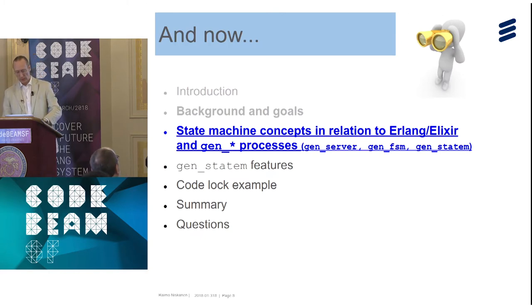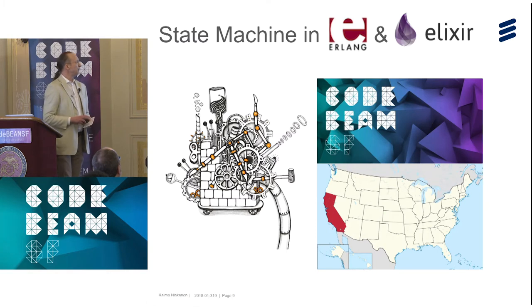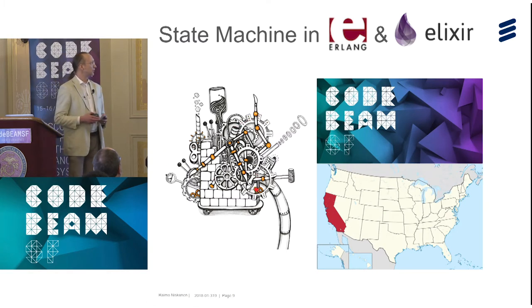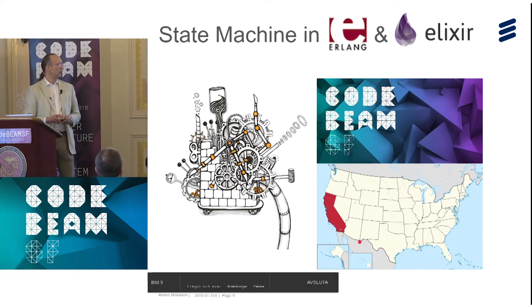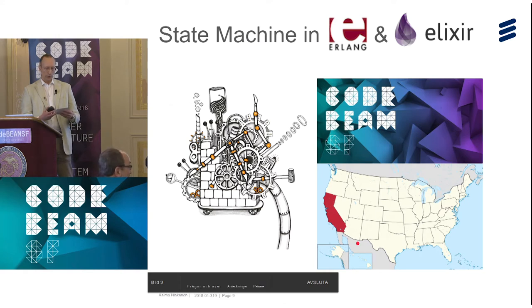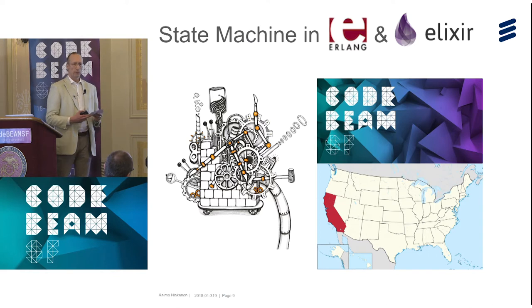The relevant state machine concepts here: a machine is a process. An event is a process message. And a state is some kind of variable in the process — it can be the code pointer, a value in the behavior engine, or something the callback module handles.